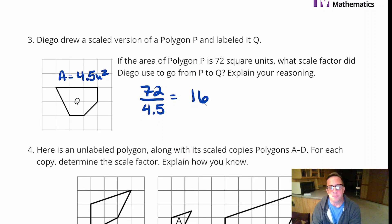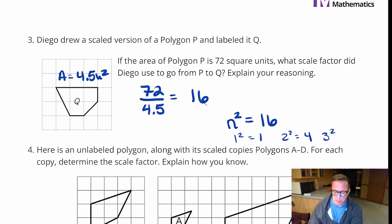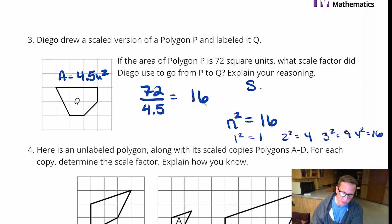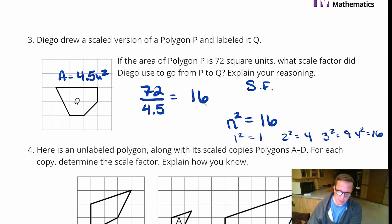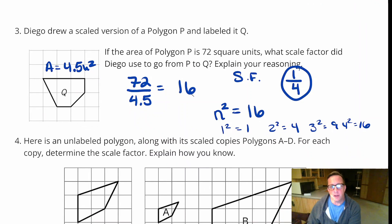It's 16 times bigger. So I'm looking for what number times itself equals 16: 1 squared is 1, 2 squared is 4, 3 squared is 9, 4 squared is 16. So the scale factor would be 4 — but it got smaller, so it was one-fourth. That's a tricky one. The scale factor was one to four, or one-fourth.